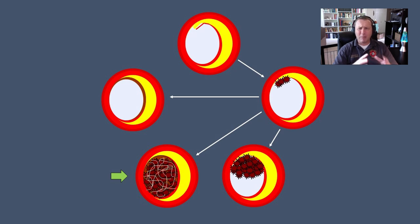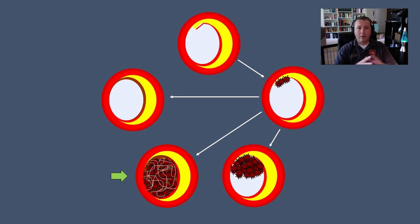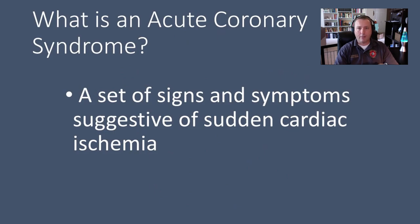Your body is capable of breaking down this blood clot on its own eventually, but your heart does not have 24 hours. Irreversible heart damage to the muscle nourished downstream from this clot can begin within about an hour. So these patients need a fibrinolytic drug to help bust up this clot, or they need to go to the cardiac cath lab.